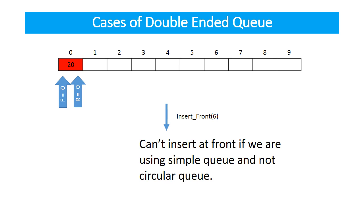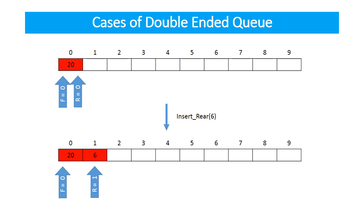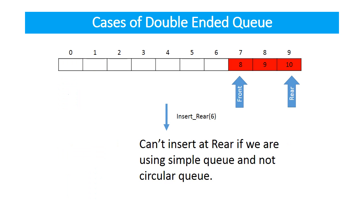Now look at this example. Front is at index 0 and you are asked to insert at front. You know that if you want to insert at the front end, you have to decrement the front variable. But you cannot decrement the front variable to the left as there is no space on the left side. So you cannot insert in this case if you are using the concept of simple queue. If you are using the concept of circular queue, you can insert by moving the front variable in a circular fashion to the last index. But in this example, I am not using the concept of circular queue, therefore we cannot insert here. Instead, you can insert at the rear end — just increment the rear variable and insert the element you want.